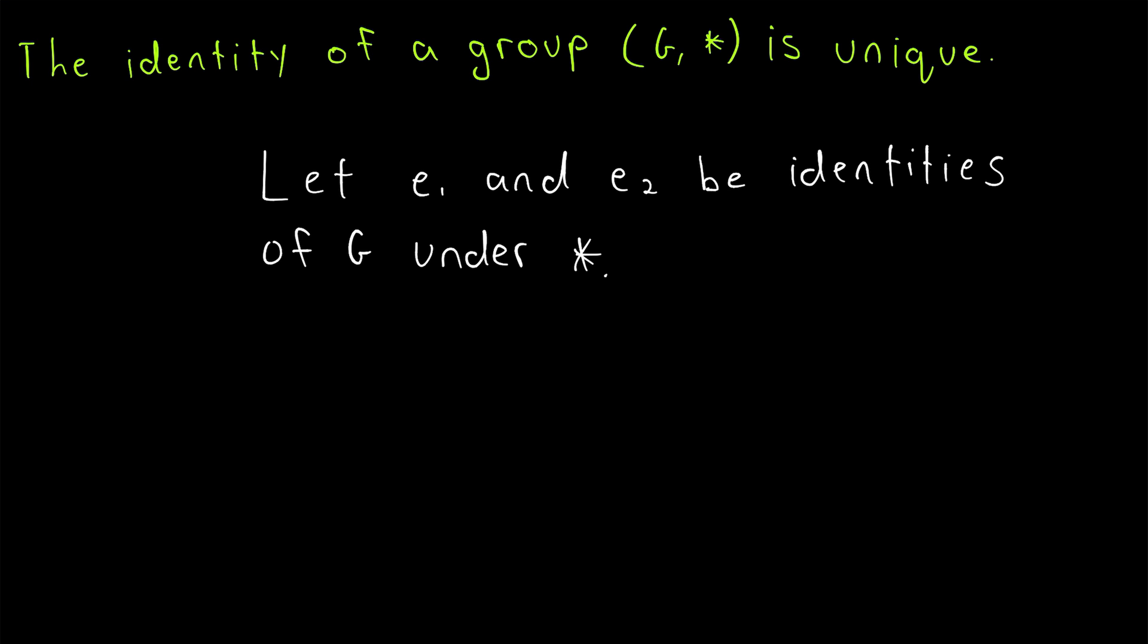To prove that the identity is unique, we'll want to show that e₁ is equal to e₂, because this demonstrates if two elements are identities, they actually must be the same element, and so the identity element is unique.